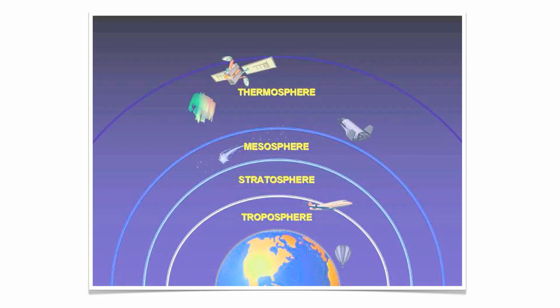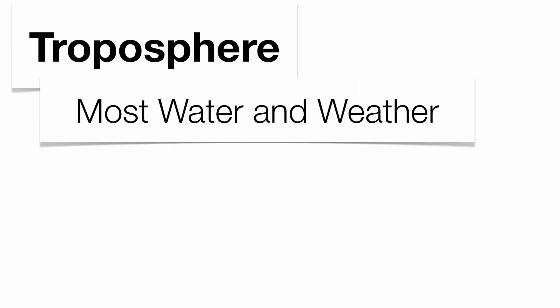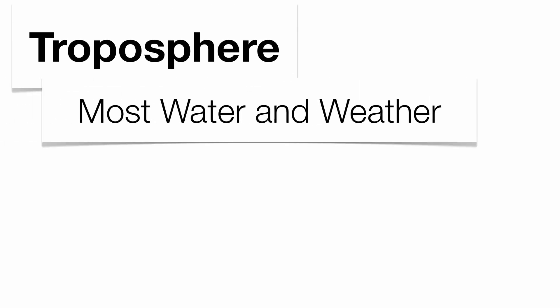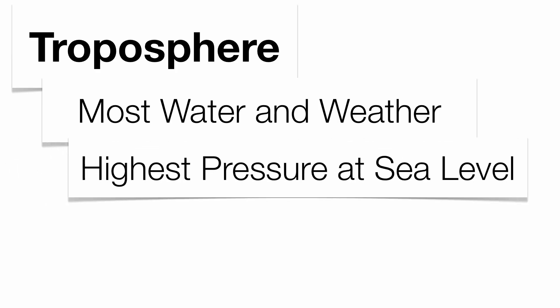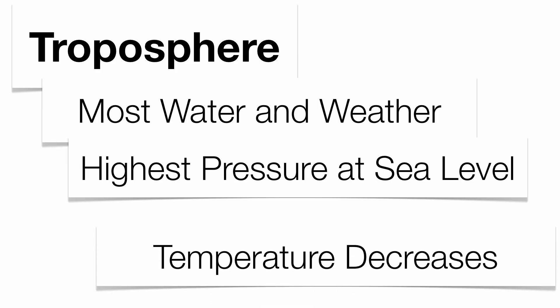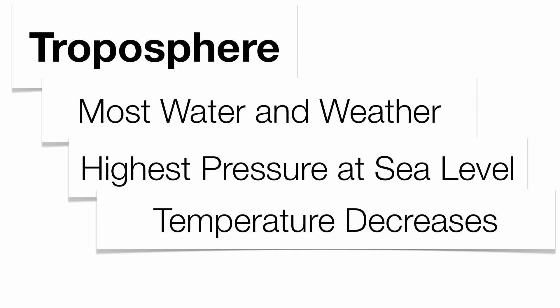The troposphere is the layer we currently live in. It's where the majority of our water vapor is found, and that's where the majority of our weather is found as well. Because we live close to sea level, we're going to have the majority of the troposphere, all the stratosphere, all the mesosphere, and all the thermosphere pushing down on top of us — so we have the greatest atmospheric pressure in the troposphere. As you travel up through the troposphere, you're physically getting further away from the Earth, so temperature decreases. That's evident when you look at mountain ranges that are high enough — many tend to be snow-capped, even in the summertime.